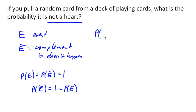So the probability of not getting a heart is 1 minus the probability of getting a heart. And what is the probability of getting a heart?